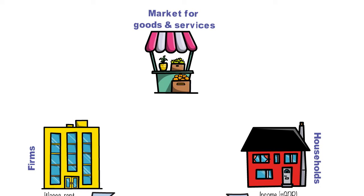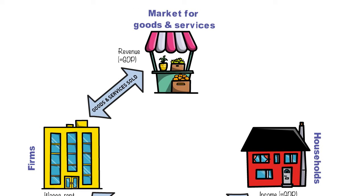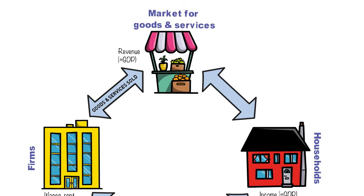We also have another market joining these components — the market for goods and services — where we move from factors of production to the actual products and services produced. Firms will produce their goods and services and sell them in these markets to households, generating revenue, which is another measure of the size of economic activity: GDP.